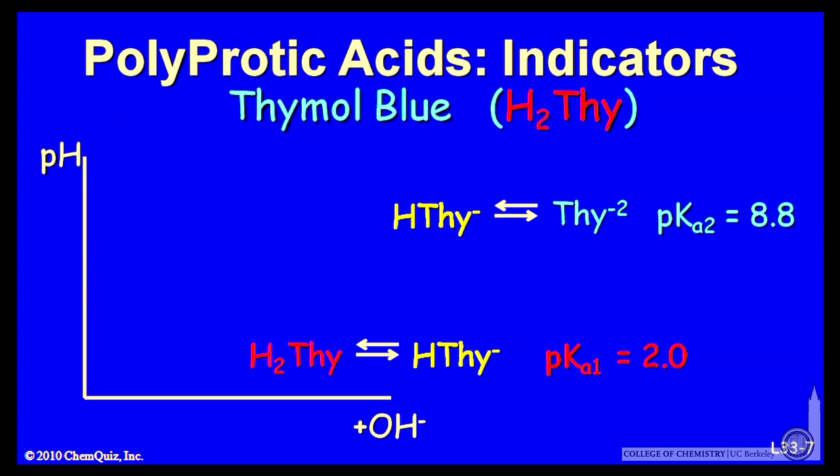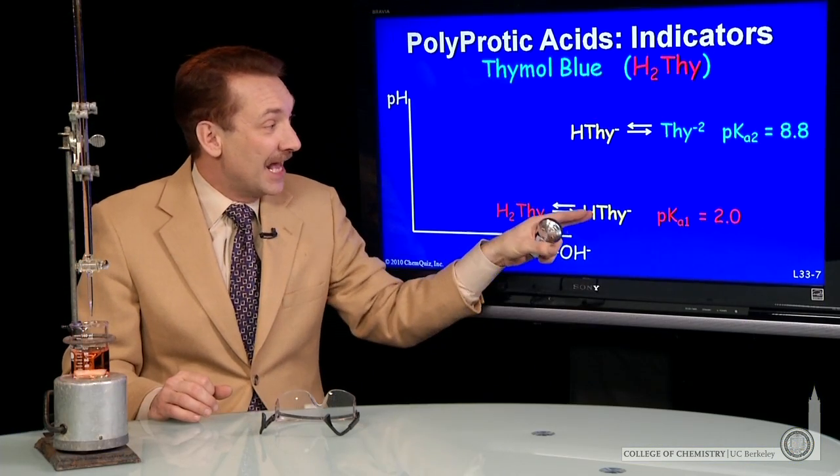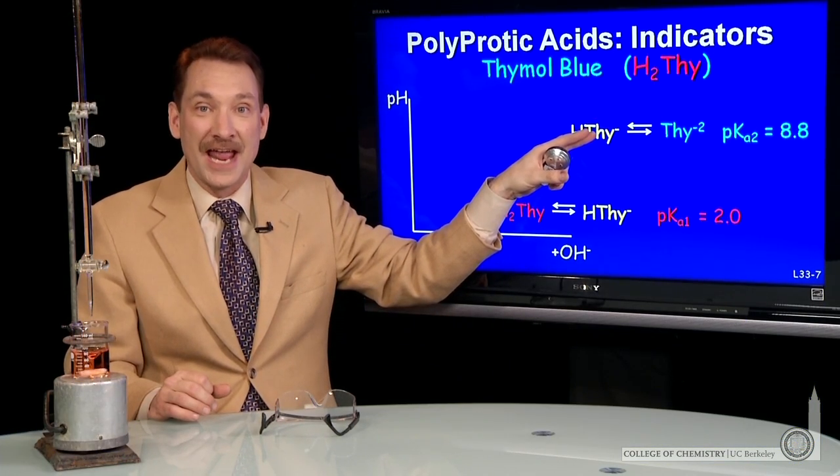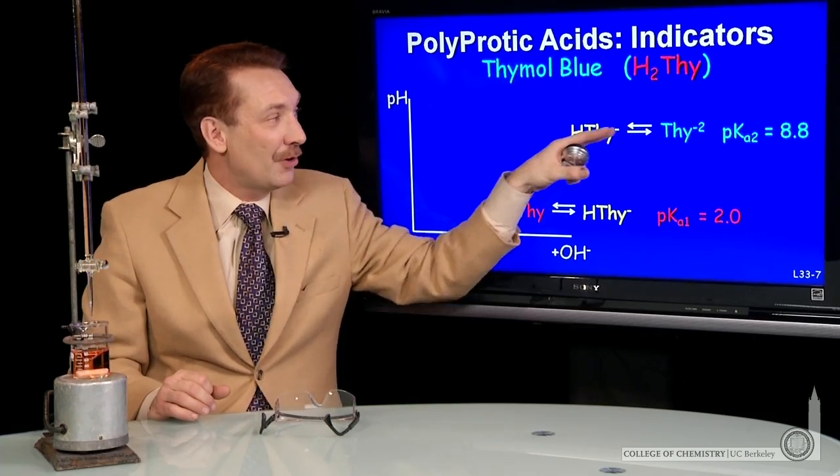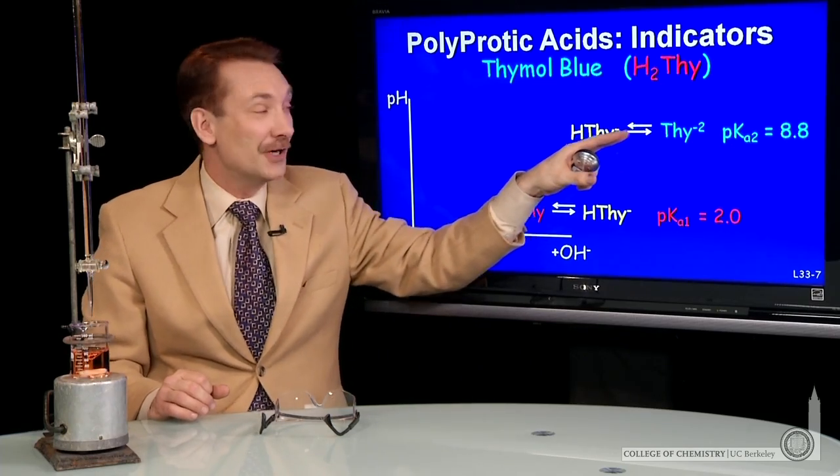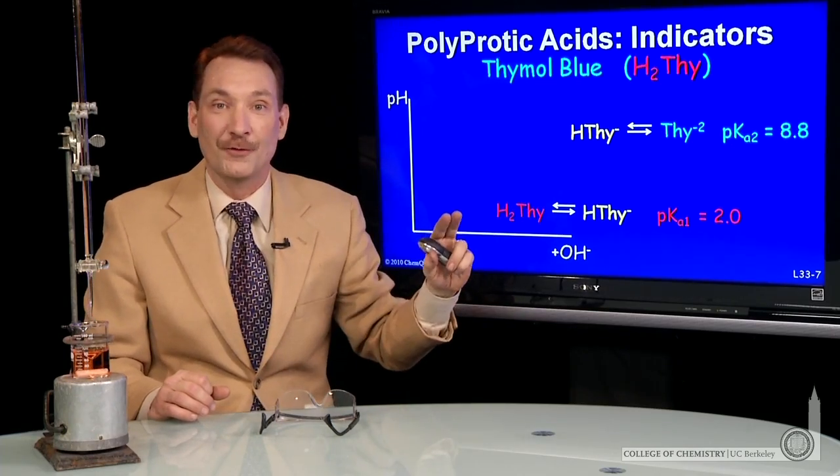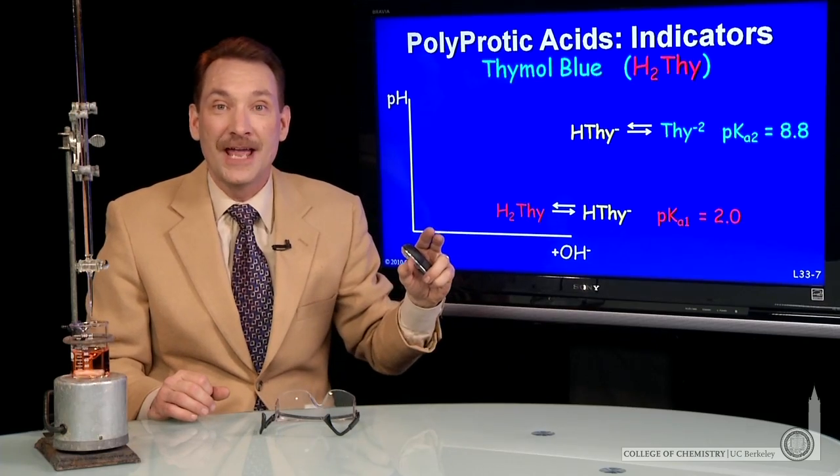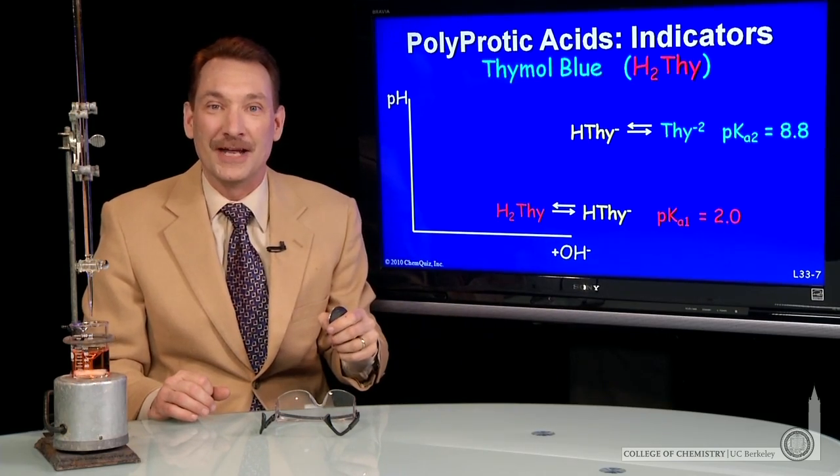Now, as the pH increases, the second pKa is around 8.8. So it's yellow until the pH reaches around 8. And at pH 8.8, it'll be an equal mixture of the yellow and the blue form. And at pHs above 8.8, the blue form will dominate.